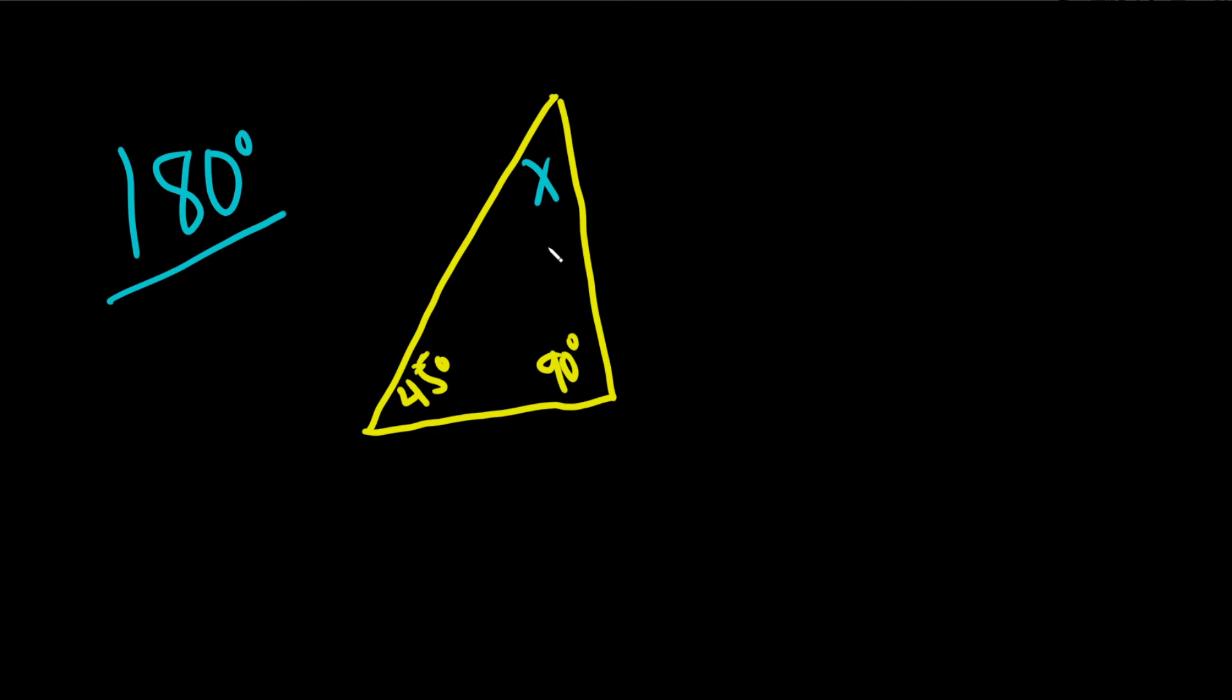So basically all you have to do in this case is just add up all of these angles and set it equal to 180. So x plus 45 degrees plus 90 degrees, and that's equal to 180 degrees.